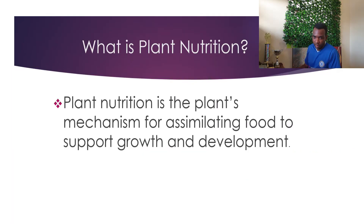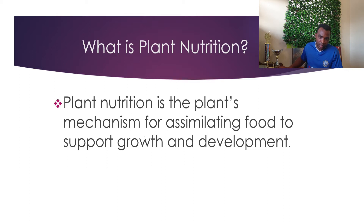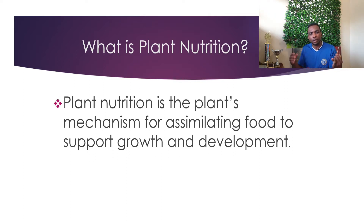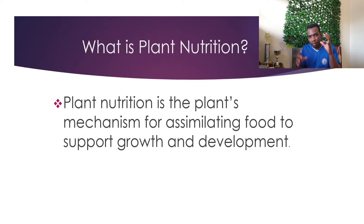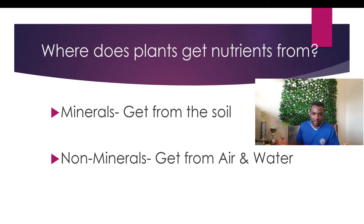First of all, what is plant nutrition? Plant nutrition is the plant's mechanism for assimilating food to support growth and development. In a nutshell, this is how the plant gathers sugars to support leaf growth, fruit development, flower development, and root development — just to support itself to grow to maturity, reproduce, and give you that beautiful fruit or whatever you get from that plant.